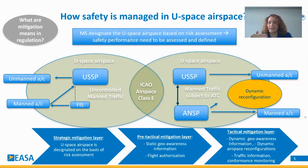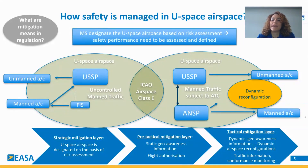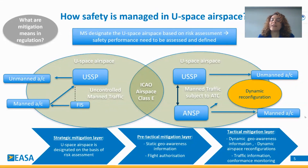Usually they are segregated, but for whatever reason — emergency, weather, or needing to alter the trajectory — a manned aircraft may need to enter the U-Space airspace. The ANSP and air traffic control then initiate what is called dynamic airspace reconfiguration in order to deviate, segregate, or separate the trajectory of the manned aircraft from the unmanned aircraft.